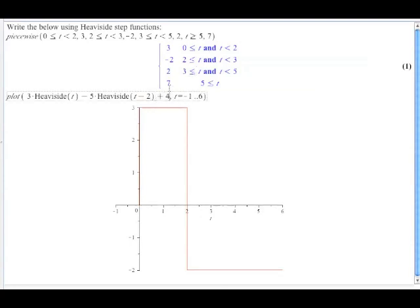So, we're going to have plus 4 times the Heaviside, and I want this switch to turn on at time 3, so that's t minus 3. So, now I've got 3 up until time 2, negative 2 up until time 3, and then I've got 2.